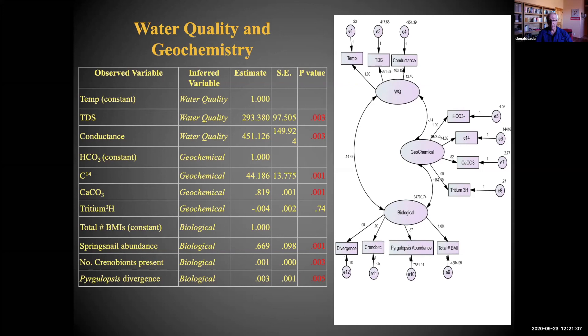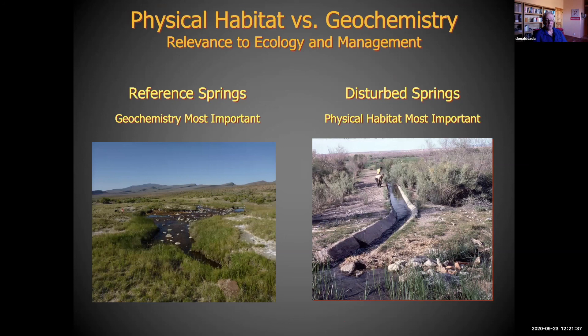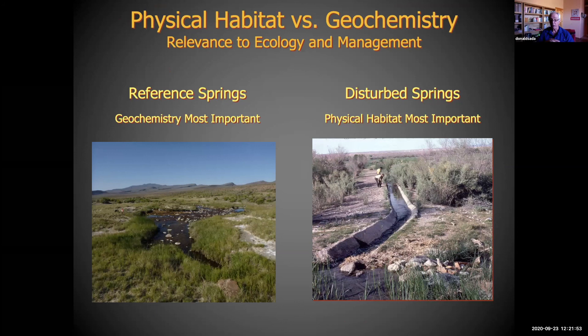Spring snail abundance, number of crenobionts, crenobiont presence in a spring, and Pyrgulopsis divergence were all statistically significant. So both physical and biological parameters are important for spring snails. In reference springs, geochemistry is the most important factor structuring communities. In disturbed springs, habitat is more important. So if you try to restore a disturbed system, it might go back to historical conditions, provided nothing has gone extinct.